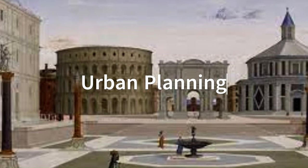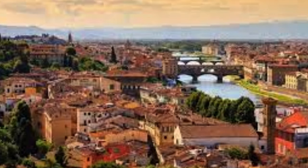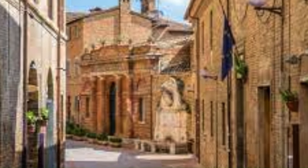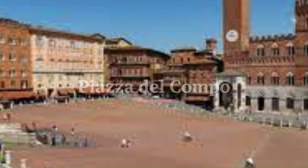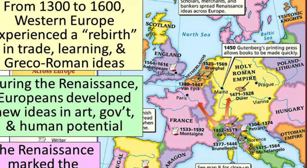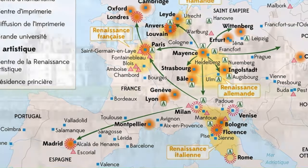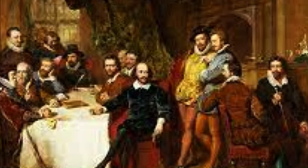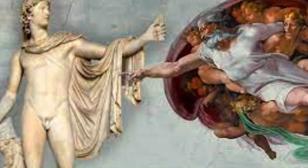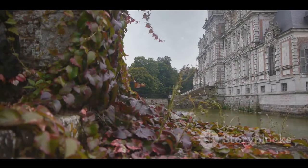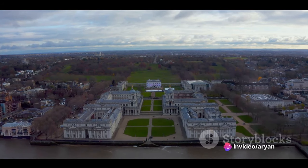The Renaissance witnessed the development of urban planning principles that emphasized the organization of cities, streets, and public squares. City squares, such as the Piazza del Campo in Siena, became central gathering places and focal points of urban design. Renaissance architectural ideas and styles spread throughout Europe, leading to the emergence of regional variations like the French Renaissance and the English Renaissance, which continued to evolve and shape architectural practice for centuries. Overall, the Renaissance changed architecture forever by introducing a renewed appreciation for classical aesthetics, a focus on human-centered design, and innovative structural and artistic techniques, laying the foundations for the architectural developments of subsequent periods and continuing to influence architectural thinking and practice to this day.